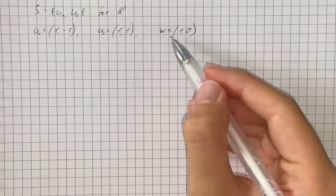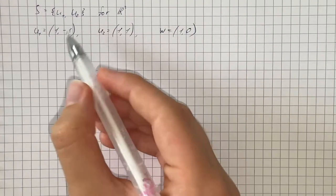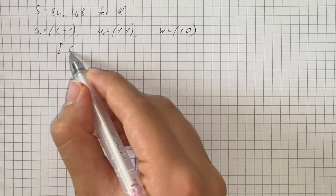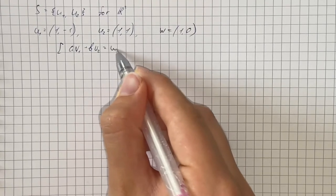In order to find the coordinate vector of W relative to the basis S, we must find scalars A and B such that A times vector 1 plus B times vector 2 equals W.